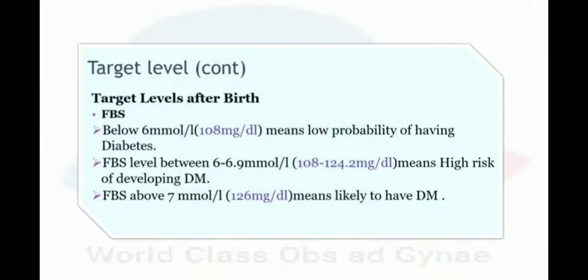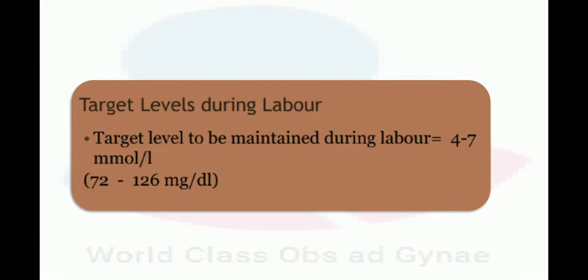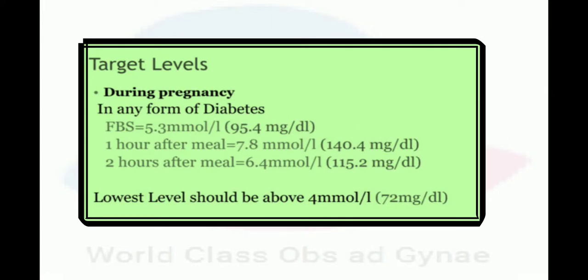Target levels after birth for fasting blood glucose: below 6 mmol/L (108 mg/dL) means low probability of diabetes; 6 to 6.9 mmol/L (108–124.2 mg/dL) means high risk of developing diabetes mellitus; above 7 mmol/L (126 mg/dL) means likely to have diabetes mellitus. During labor, target blood glucose is 4 to 7 mmol/L (72–126 mg/dL). During pregnancy in any form of diabetes: fasting 5.3 mmol/L (95.4 mg/dL), 1 hour after meal 7.8 mmol/L (140.4 mg/dL), 2 hours after meal 6.4 mmol/L (115.2 mg/dL), with a lowest level above 4 mmol/L (72 mg/dL).